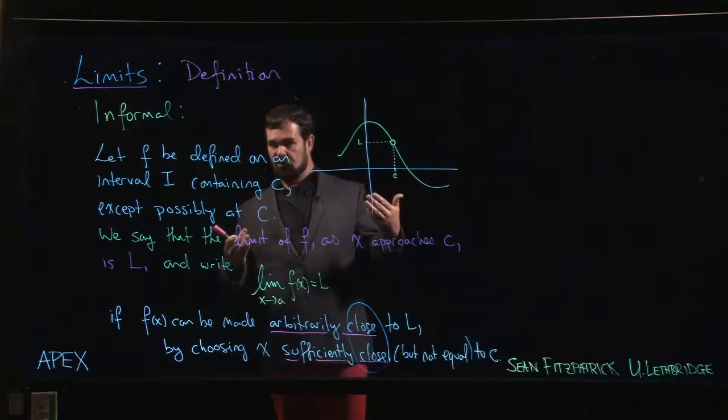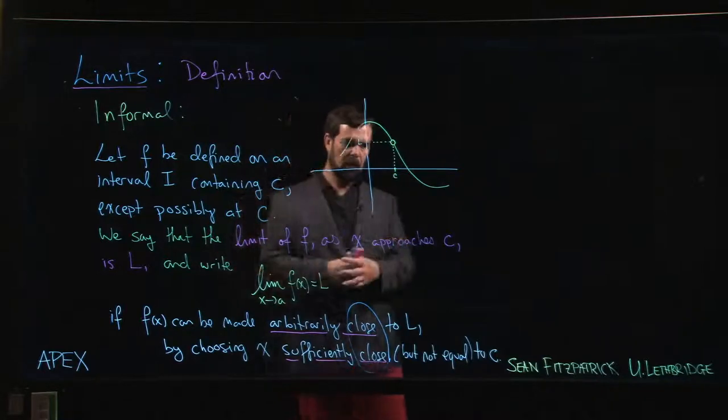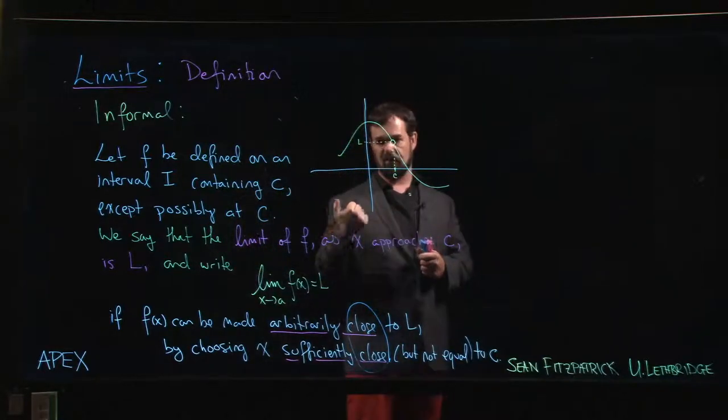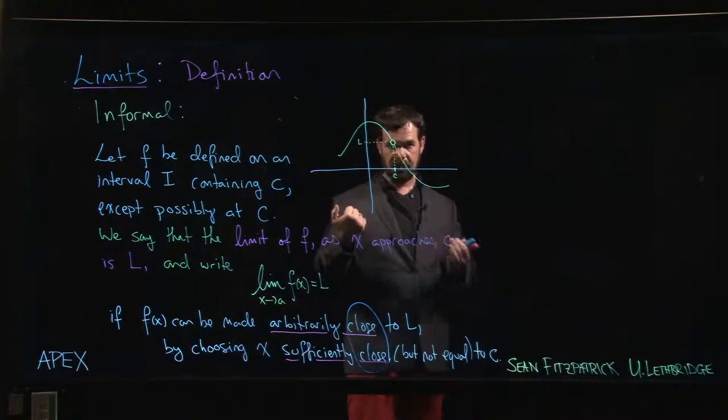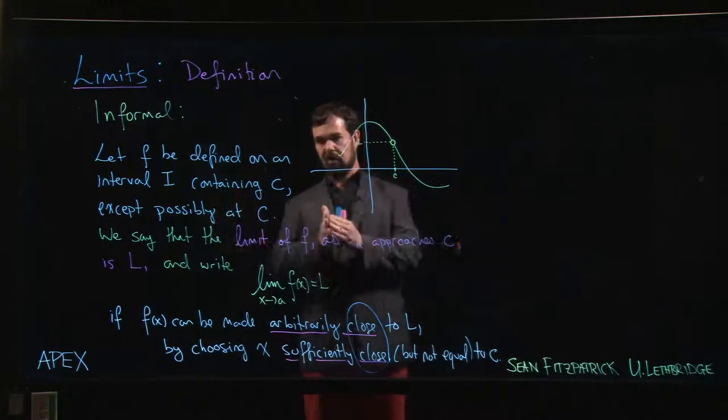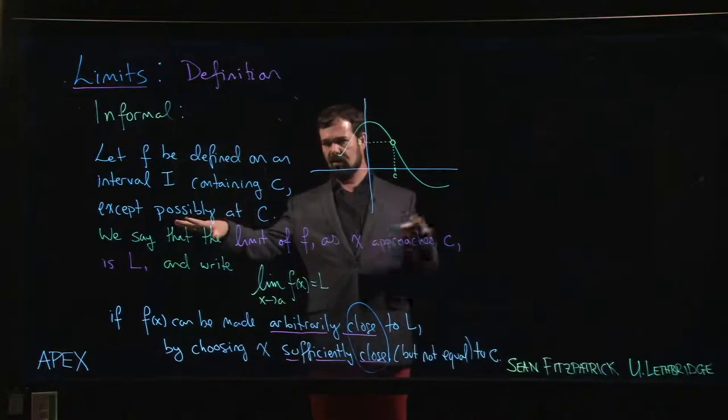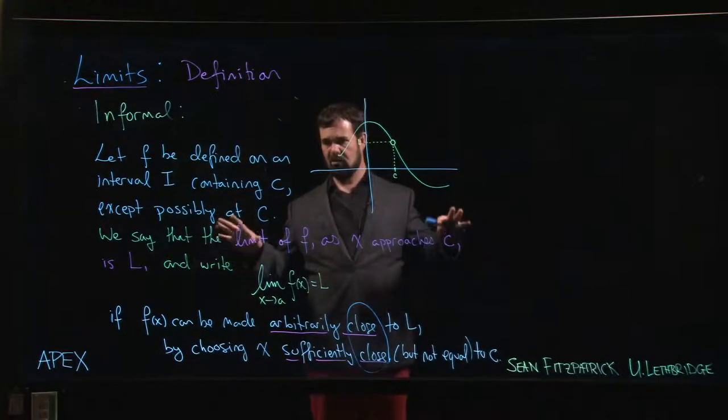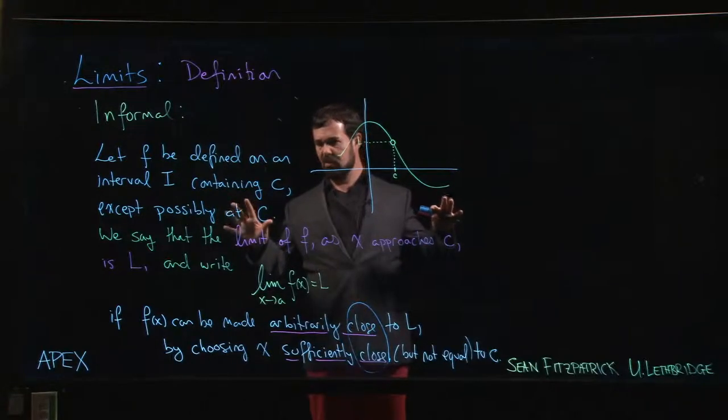When you're looking at these difference quotients, these derivatives, you're trying to have things two ways. On the one hand you're saying that h isn't zero because you want to divide by it. On the other hand you're saying you want h to go to zero because you're interested in what happens when h goes to zero. So it's not zero until you want it to be, and then it's zero, which seems like you're cheating.